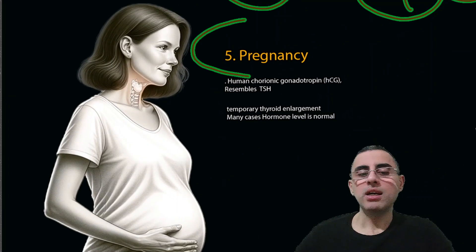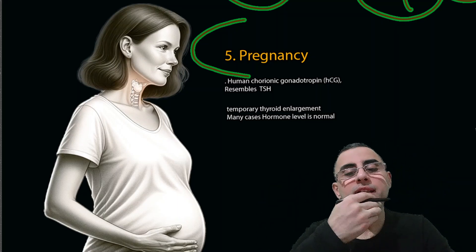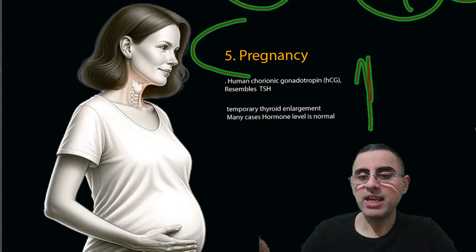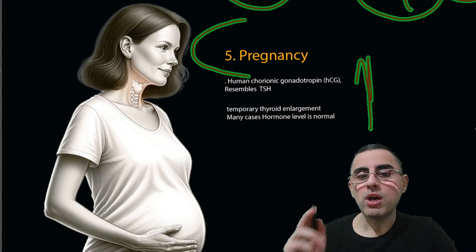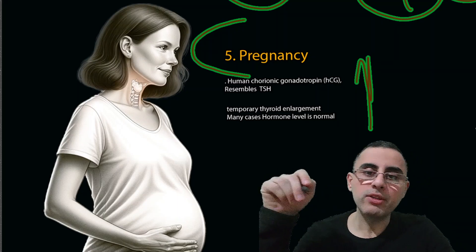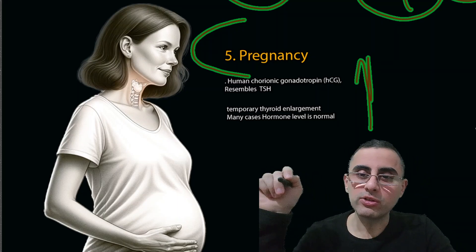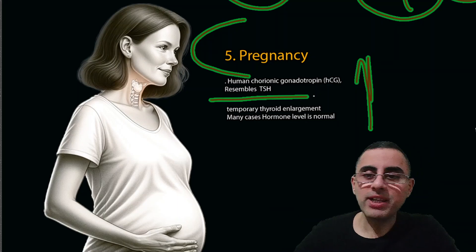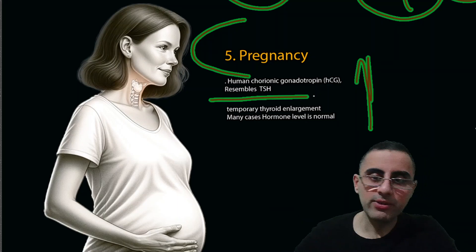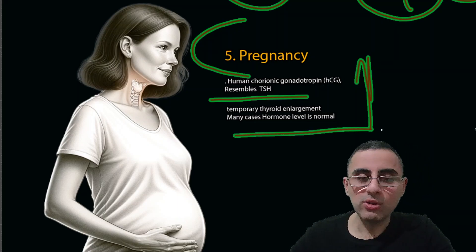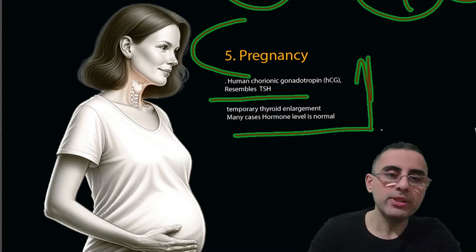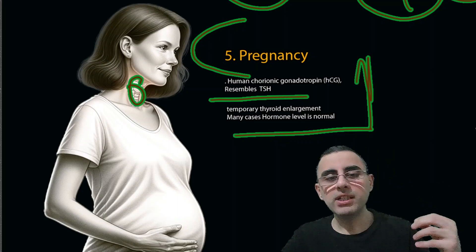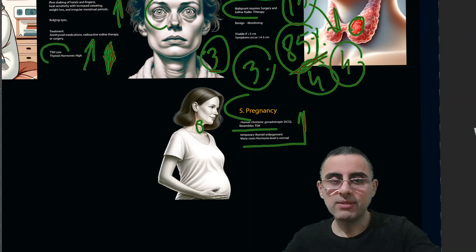The fifth most common cause of goiter is pregnancy. During pregnancy, levels of human chorionic gonadotropin (HCG) are high, and HCG resembles TSH — thyroid stimulating hormone — so it can stimulate and enlarge the thyroid gland. In many cases, thyroid hormones remain normal but there is a temporary enlargement of the thyroid gland. This is normal during pregnancy and usually the enlargement is slight and not visible.